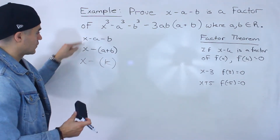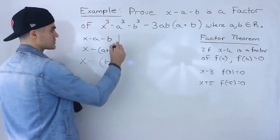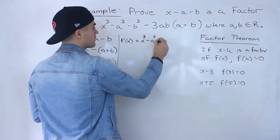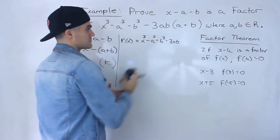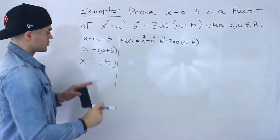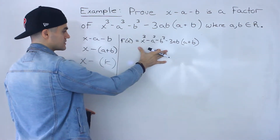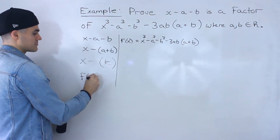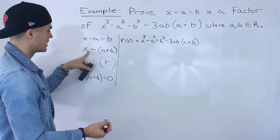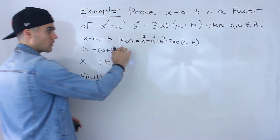So if x minus (a plus b), which is the same as x minus a minus b, is a factor of this polynomial, I'm going to label this polynomial as f(x): x cubed minus a cubed minus b cubed minus 3ab(a plus b). To prove that x minus (a plus b) is a factor of f(x), what we have to prove is that f(a plus b) equals 0. I converted it to the x minus k format, and now I just need to prove that f(k), which is f(a plus b), equals 0 in this polynomial.